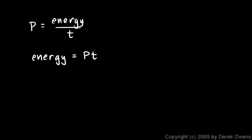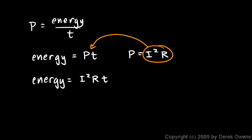Now, let's substitute. Let's take this P equals I squared R. Take this expression for P, I squared R, and substitute it right there. And we get energy is equal to I squared R times t.